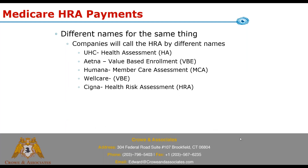Different companies call them different things, but they're all considered a health risk assessment. United calls it a health assessment. Aetna calls it a value-based enrollment — the VBE. Humana calls it their member care assessment. WellCare uses the VBE as well. And Cigna actually calls it what we know it as — a health risk assessment. You'll hear different acronyms thrown around, all meaning the same thing. There's certainly other carriers that do these; I just wanted to mention a few.